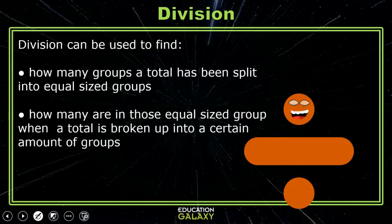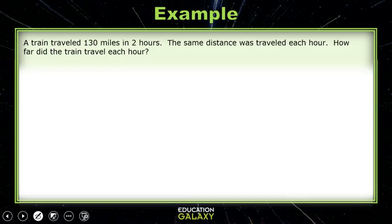Now let's look at division. Division can be used to find how many groups a total has been split into equal-size groups, or how many are in those equal-size groups when a total is broken up into a certain amount of groups. Let's check out an example.